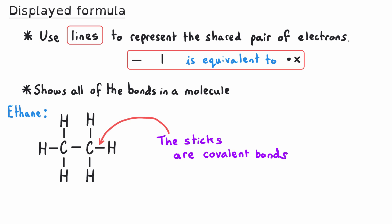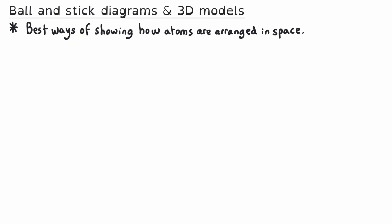We normally show displayed formulae with bonds drawn up, down, left, and right at 90-degree angles. In an exam, you could be expected to draw the displayed formula for certain specific substances you will be told to learn. We can also use a displayed formula to work out a molecular formula by counting the atoms of each element. This displayed formula has two atoms of carbon — written as C2 — and six atoms of hydrogen — written as H6 — giving the molecular formula C2H6. Remember to write those numbers as subscript, smaller than the capital letter used for the element symbol.